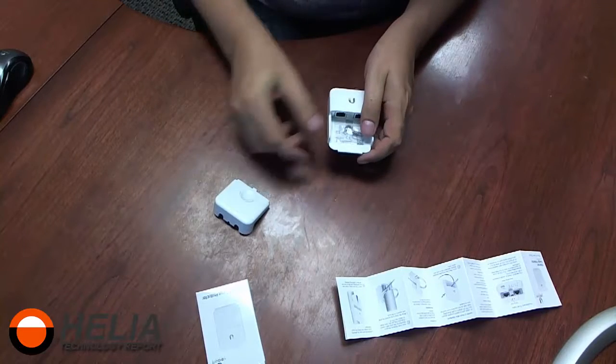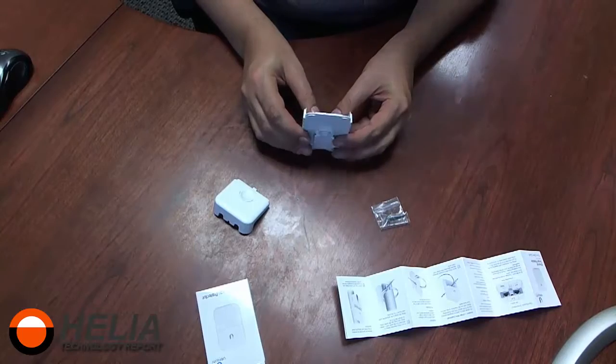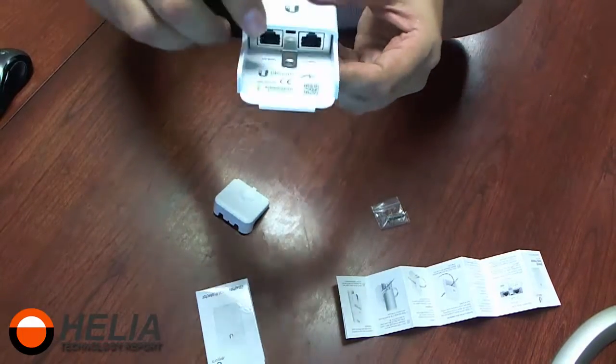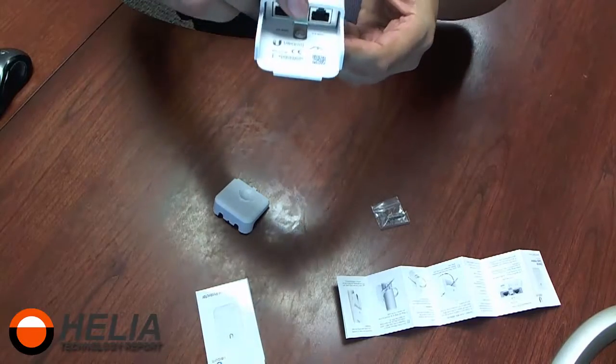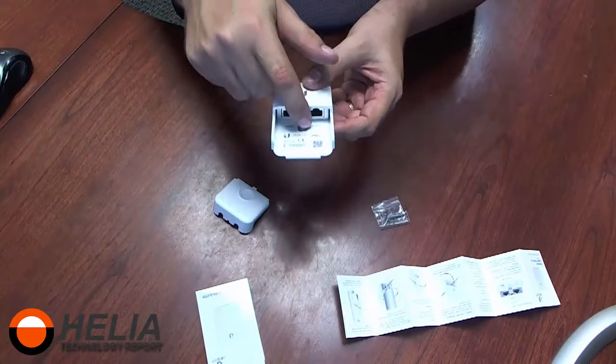The front comes off. There's a screw and we've got two jacks in here. There is an Ethernet in/out and then a second Ethernet in/out, so the side you put it in does not matter. This center pole